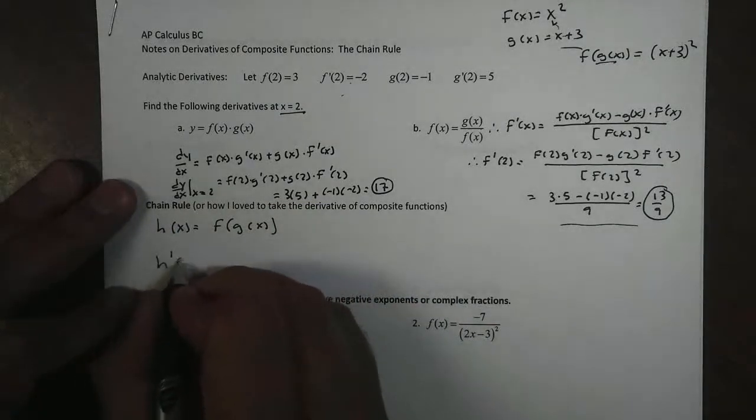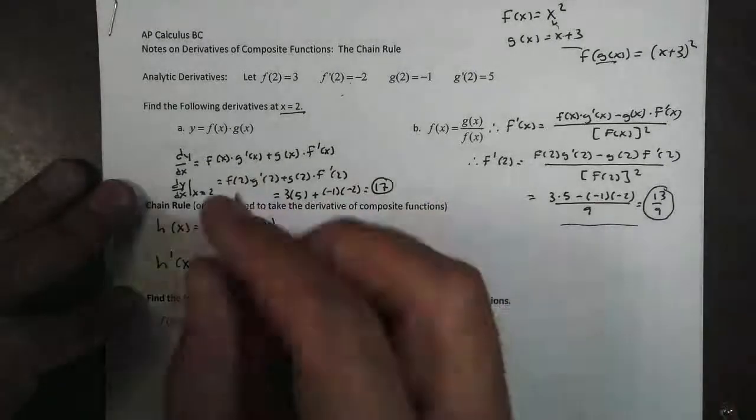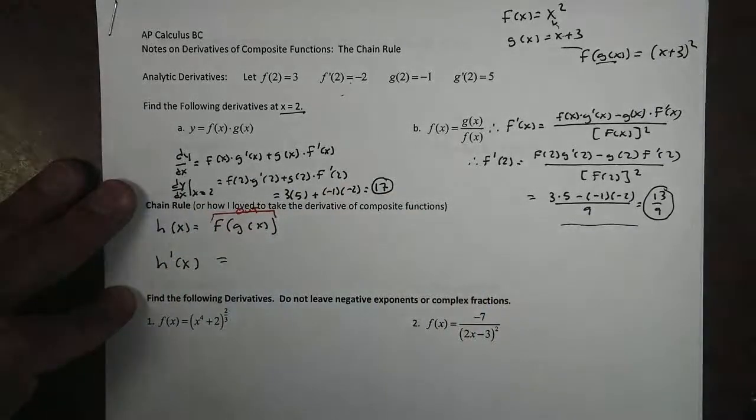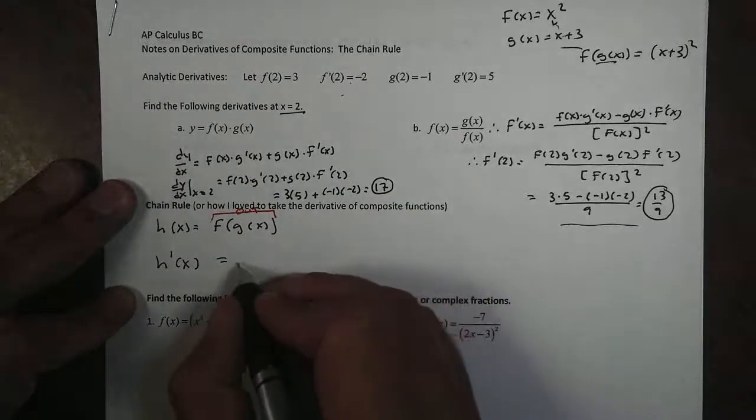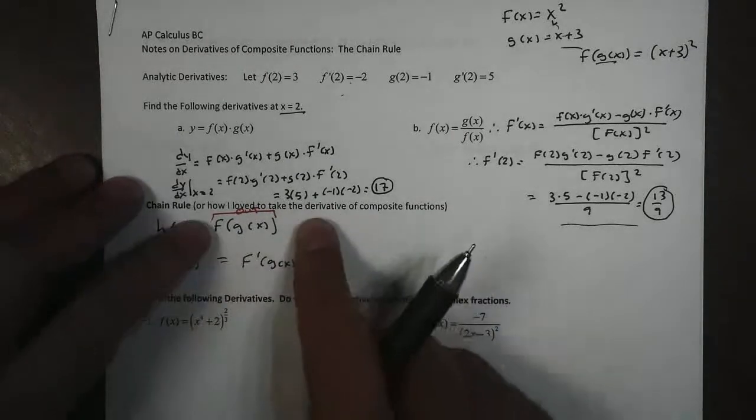But let's just go ahead and take the derivative. To take the derivative, we have to look at the two parts or multiple parts of a function. For example, we have this outer function right there, f(x). Well, the first thing we're going to do is we're going to take the derivative of that outside function.